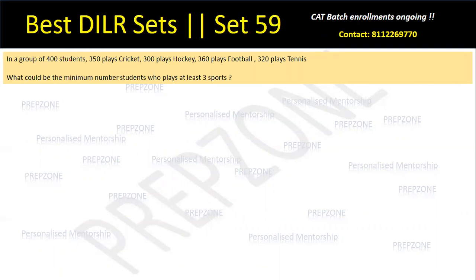The set says that in a group of 400 students, 350 play cricket, 300 play hockey, 360 play football, and 320 students play tennis. What could be the minimum number of students who play at least three sports? This is a classic case of overlapping and not much information is given to us.